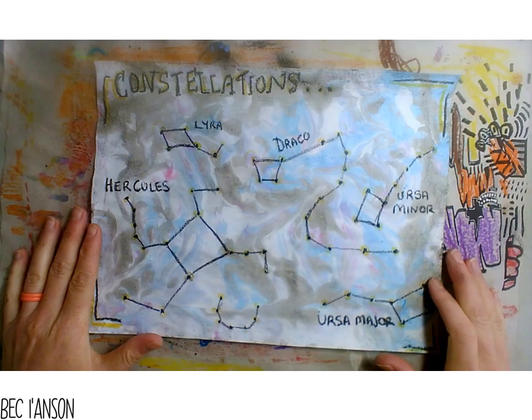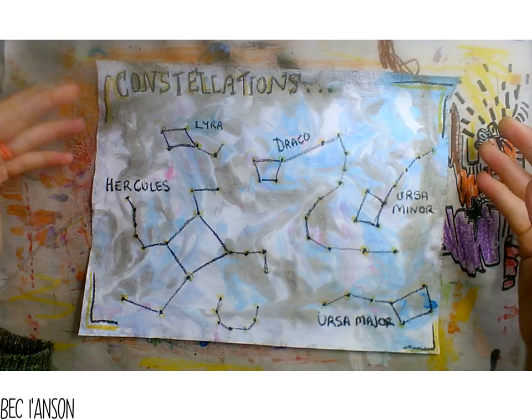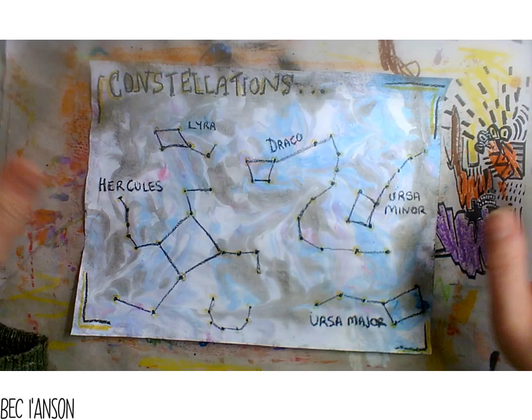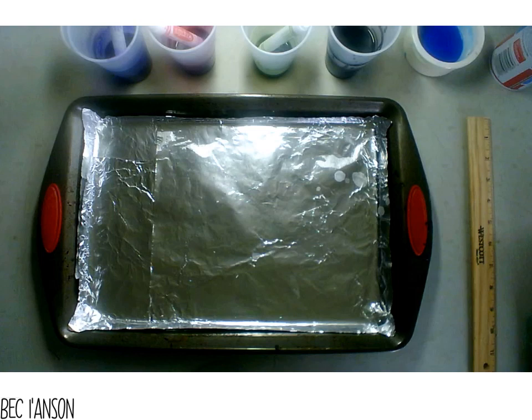Now that we know all about the constellations, it's time to start creating some artwork. The first thing we're going to do is make our background from marbled paper. Then, once we've learned how to make our marble paper, I'll show you how to create your constellations on top. This star chart will really help you recognize different constellations in the night sky, and it'll give us an opportunity to learn the marbling effect, which I'm really excited to share with you. Let's get started!